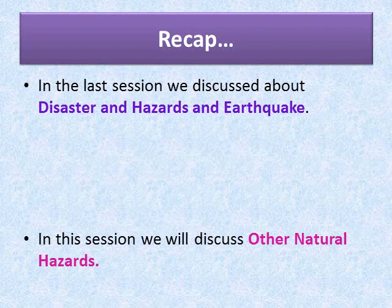A disaster is a serious disruption in society causing widespread material, economic, social, or environmental losses which exceed the ability of the affected society to cope using its own resources. There are two types of disasters: natural disaster and man-made disaster. Natural disasters occurring beneath the earth's surface include earthquakes, tsunamis, and volcanic eruptions. Those occurring on the surface of the earth include landslides and avalanches.